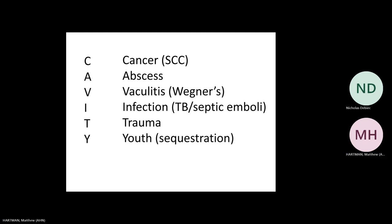This brings us to one of our first differentials for cavity — one of my favorite mnemonics because it actually spells the word CAVITY. Cancer is first — usually squamous cell carcinoma, but adenocarcinoma can cavitate too. Abscess. Vasculitides, such as Wegener's. I for infection — always think TB and septic emboli. T for trauma — these are patients who get post-traumatic pneumatoceles. And Y for youth — congenital things such as sequestrations, of which there are two types.